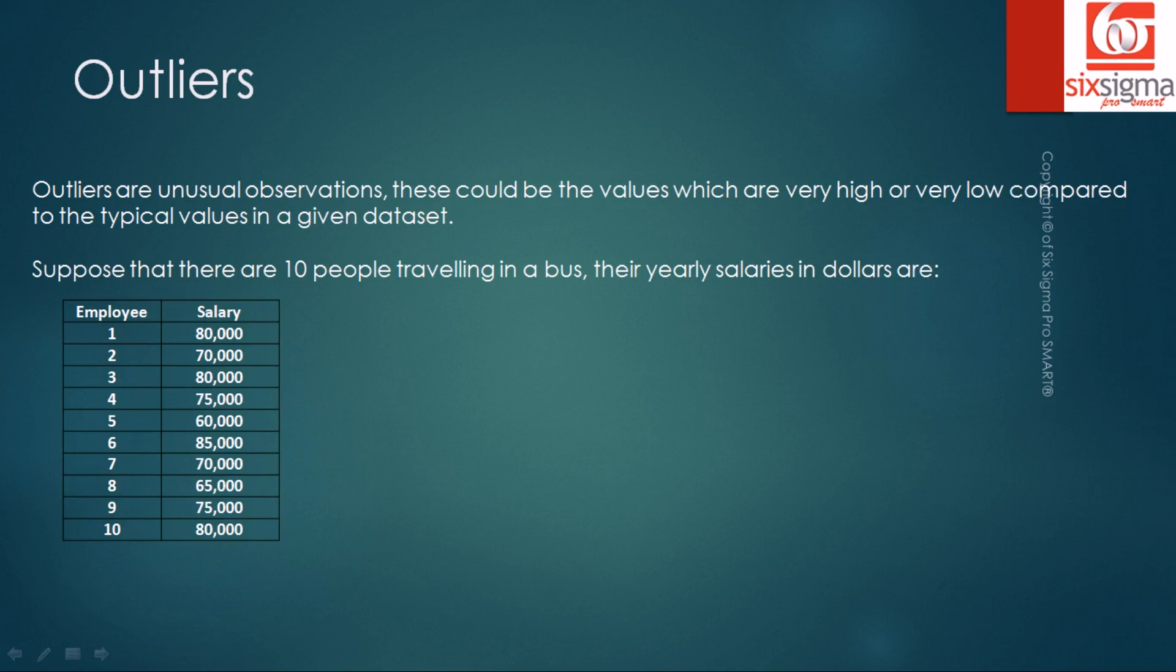Suppose there are 10 people traveling in a bus. Their yearly salaries in dollars are listed below. It has a minimum of 60,000 and a maximum of 85,000. When we calculate, we can easily get a mean of 74,000, a median of 77,500.